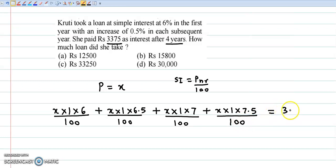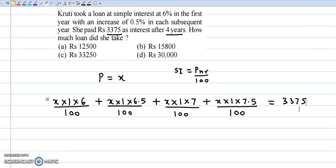So we solve this equation. 6 into X becomes 6X plus 6.5X plus 7X plus 7.5X upon 100 is equal to 3375.